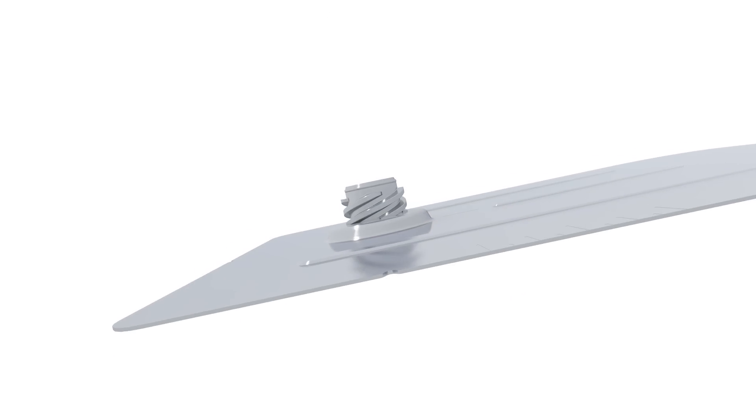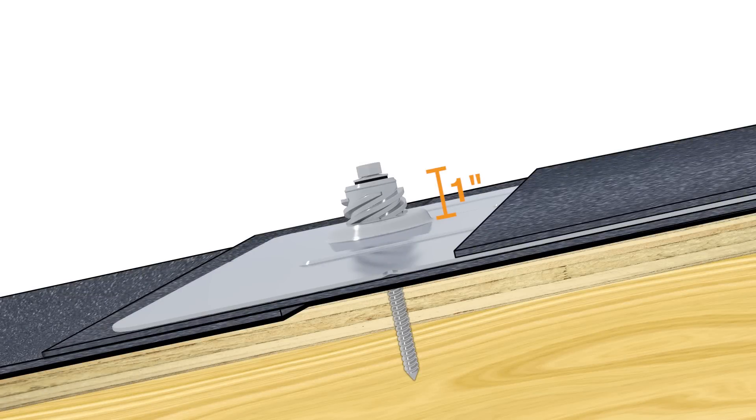Redesigned from top to bottom, Flashfoot II uses a stack of high-strength components to elevate the water seal a full inch above the roof plane.